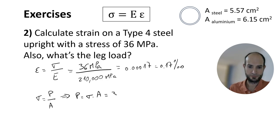We have 36 megapascals or newtons per millimeter squared times the area. For steel is 5.57 centimeter squared, so in millimeters it's going to be 557. And that's 20,000 newtons. As we said in previous videos, for leg load we are going to use kilonewtons.